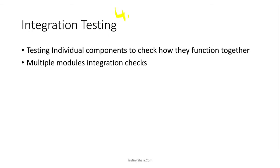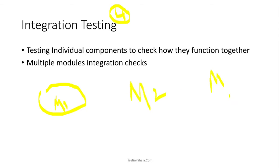The fourth type is integration testing. Here we test different modules that were already tested individually, now integrated together, to see whether there are any integration challenges. For example, we may have module M1 (login page), module M2 (inbox), and module M3 (logout).